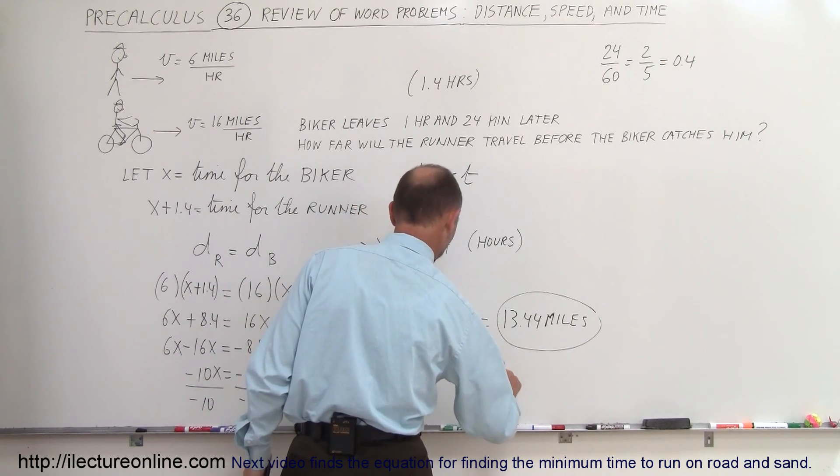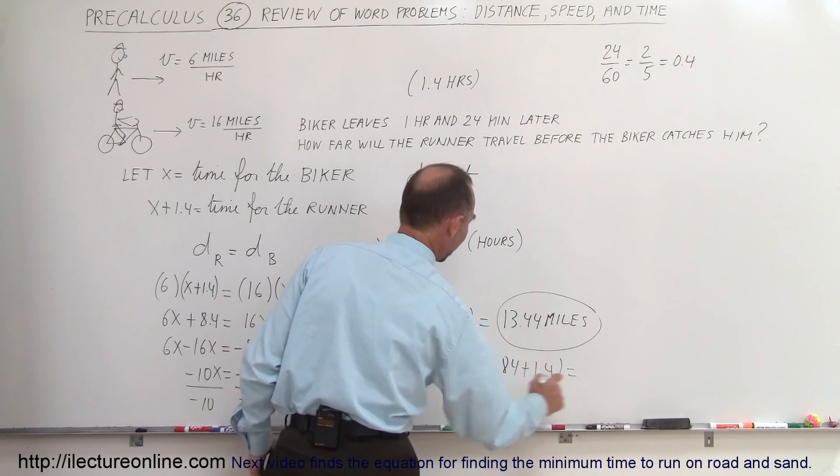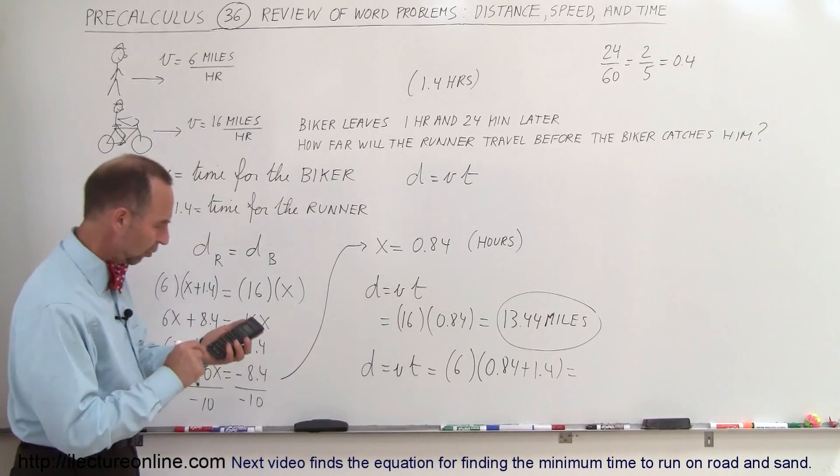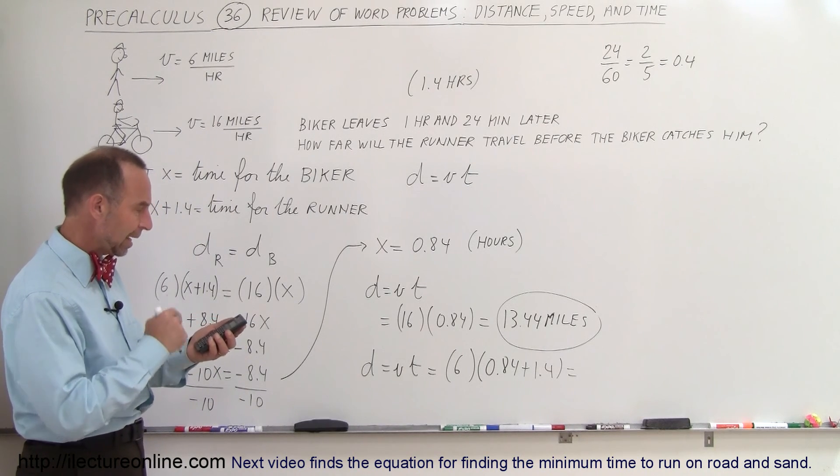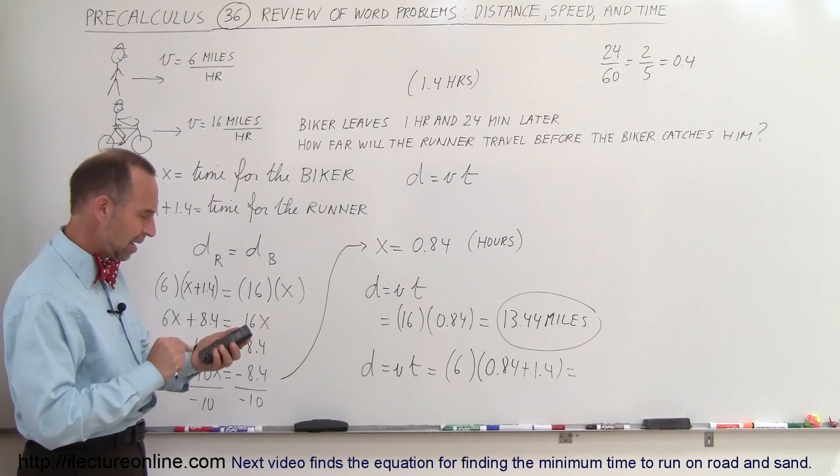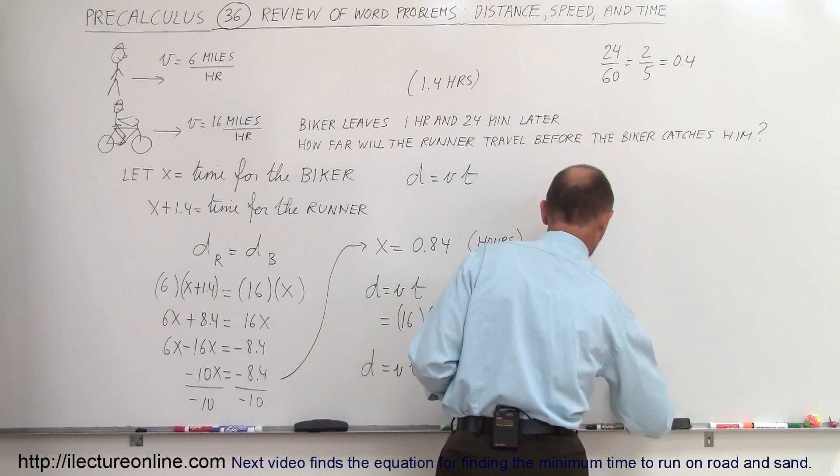Let's see here, x is 0.84 plus 1.4, and let's see that gives us the same result. So 1.4 add that to 0.84, and then multiply it times 6, and sure enough we get the same result, 13.44 miles, and that means we did the problem correctly.